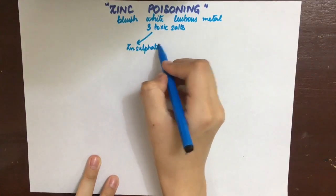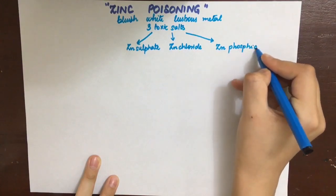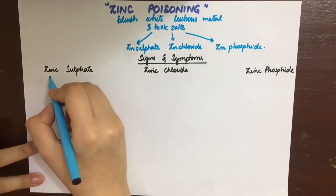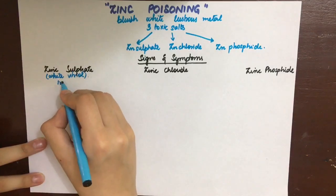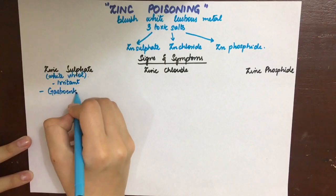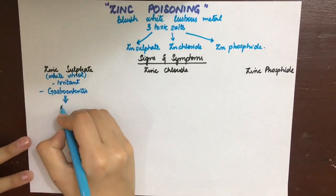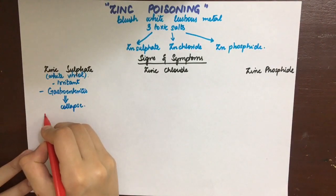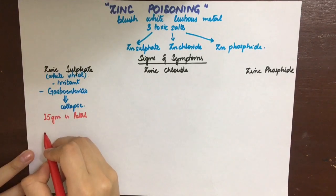We will discuss all three separately. First, zinc sulfate, also known as white vitriol, acts as an irritant poison causing gastroenteritis. The gastric symptoms include GI irritation, metallic taste in the mouth, pain in the gullet, stomach, and abdomen, vomiting and diarrhea, followed by collapse.